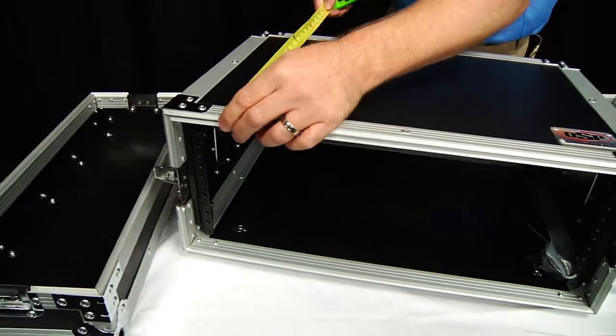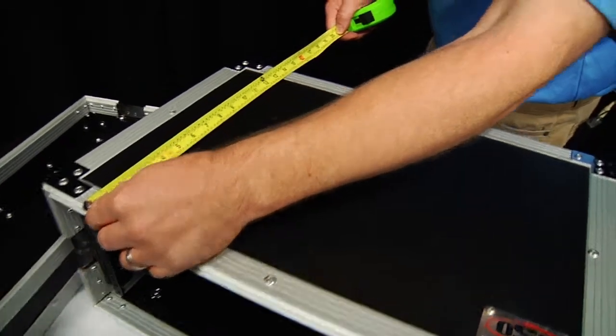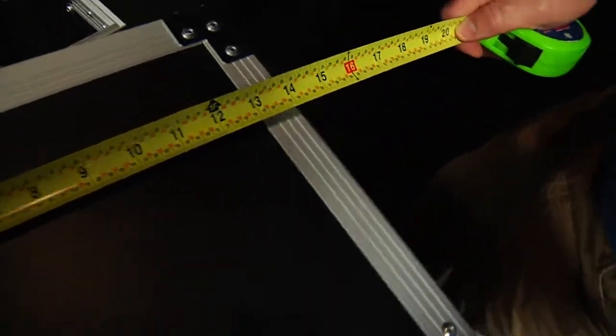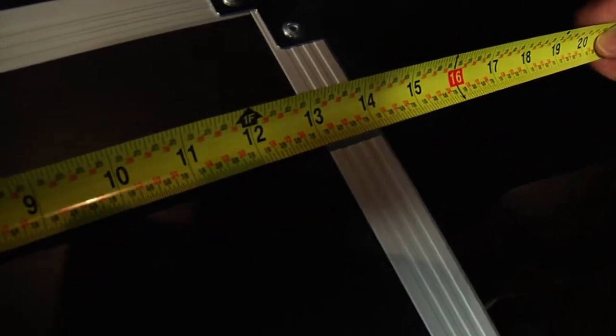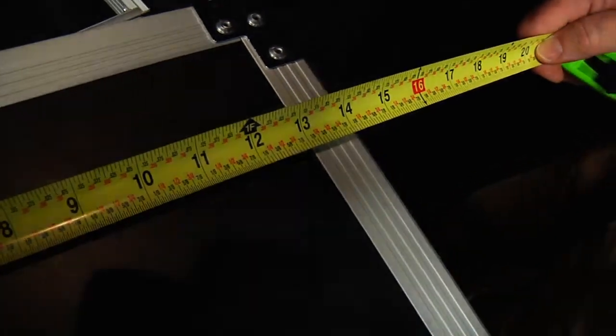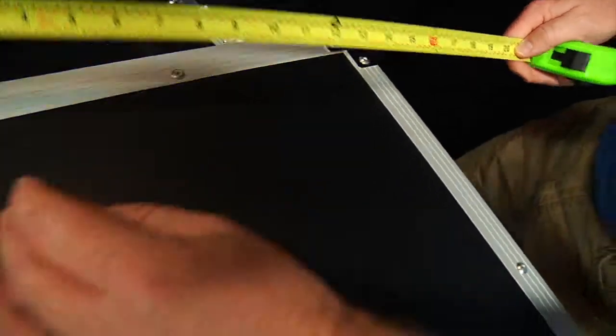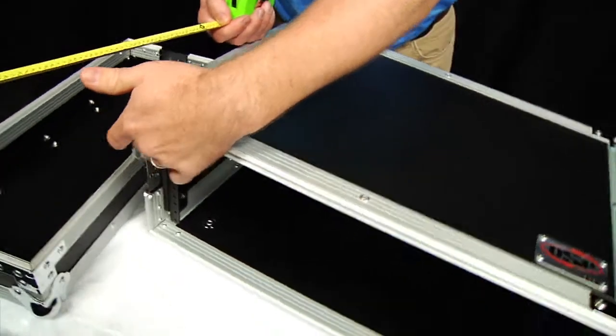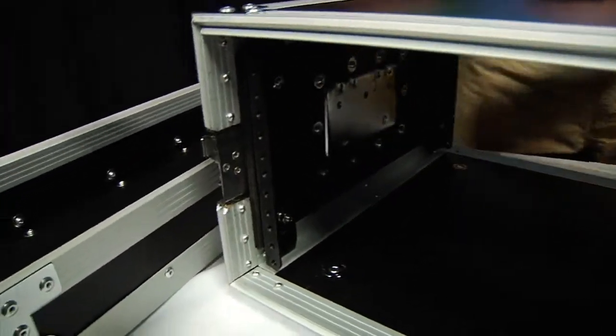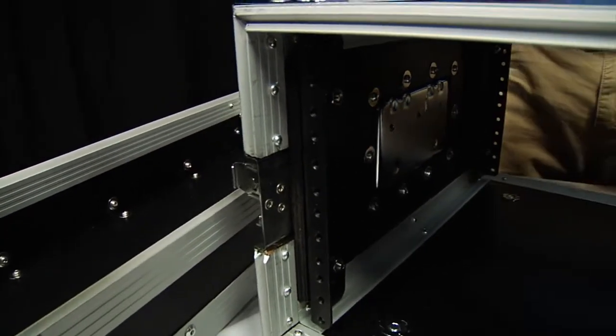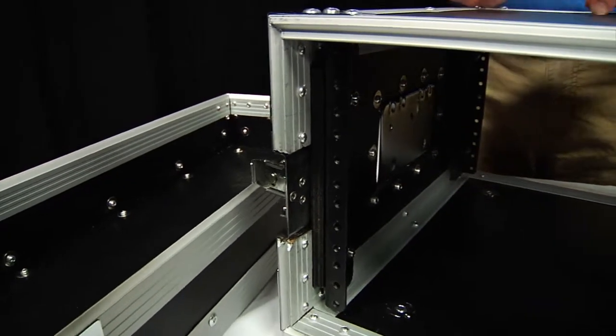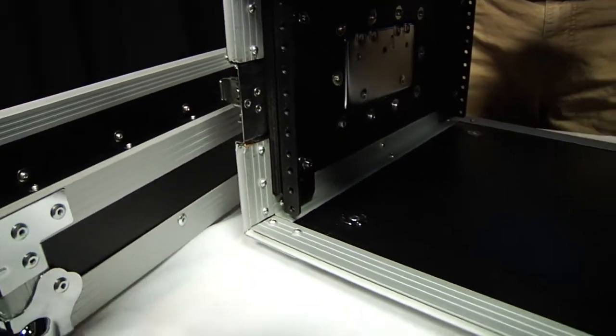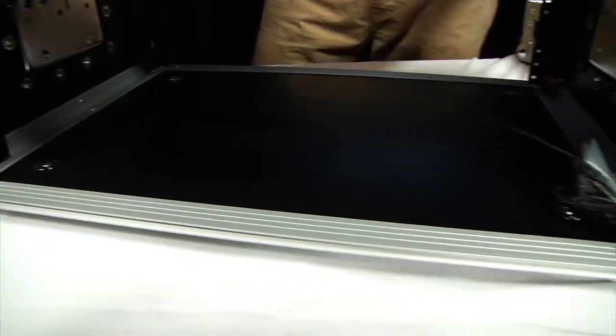And then the outside depth which is why it's an RC4U14 is 14 inches with the lids off from front to back edge. The rack rails as you can see here are recessed just about an inch, maybe three quarters of an inch to an inch from the edge of the case. So it just adds further protection for your gear that's mounted inside there.